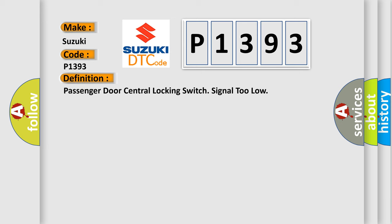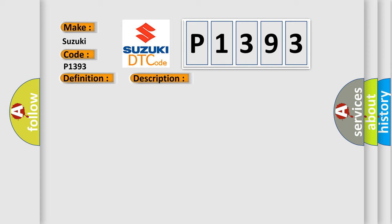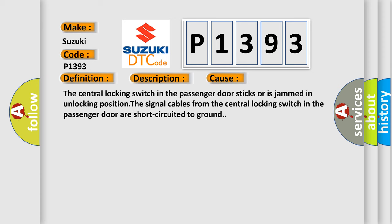Here is a short description of this DTC code. Diagnostic trouble code DTC GLA-525 is stored if the control module registers that the unlocking signal from the passenger door central locking switch is less than 1.5 volts for more than 10 seconds when the ignition is on, or when the unlocking signal is detected from both the interior switch and the passenger door for more than 10 seconds. Note: the DTC may be stored if the central locking switch is held in the unlocking or locking position for at least 10 seconds; fault causes of this type are not included in the fault tracing procedure. This diagnostic error occurs most often in these cases: the central locking switch in the passenger door sticks or is jammed in the unlocking position, or the signal cables from the central locking switch in the passenger door are short-circuited to ground.